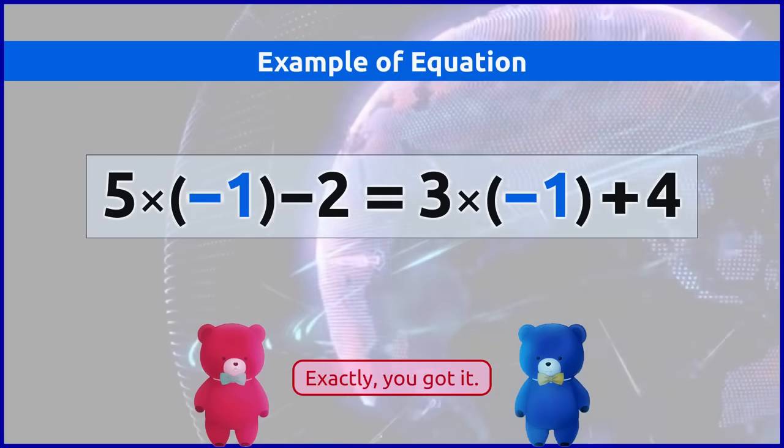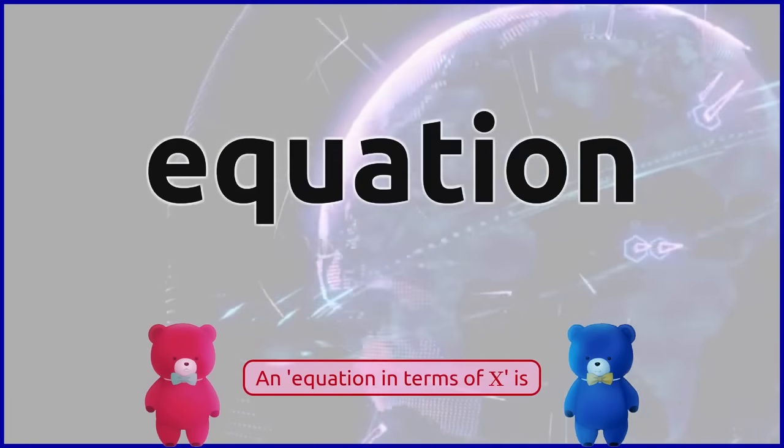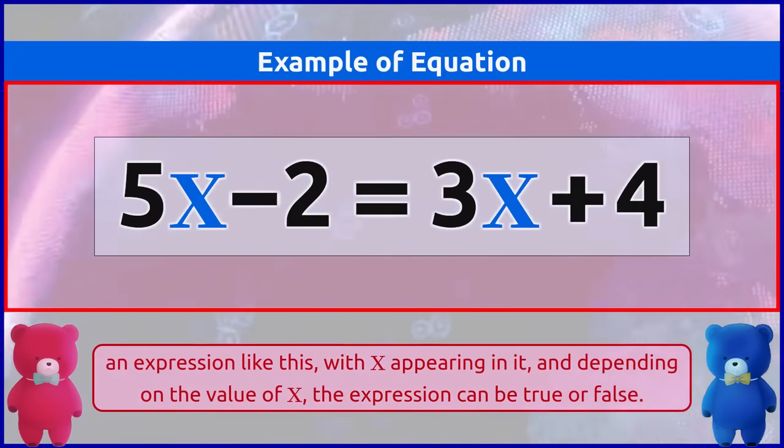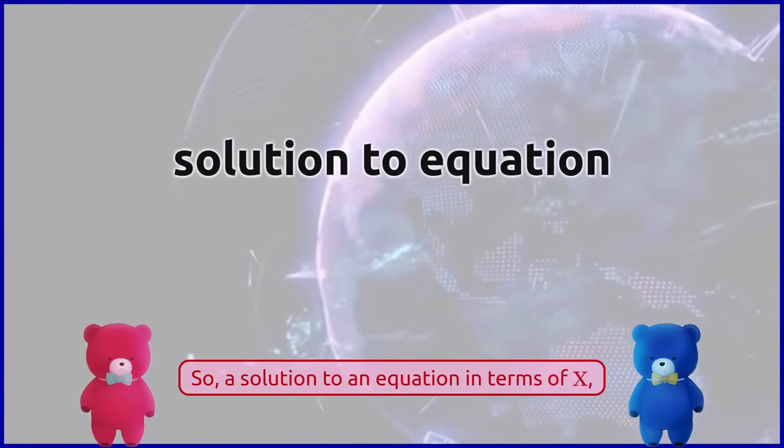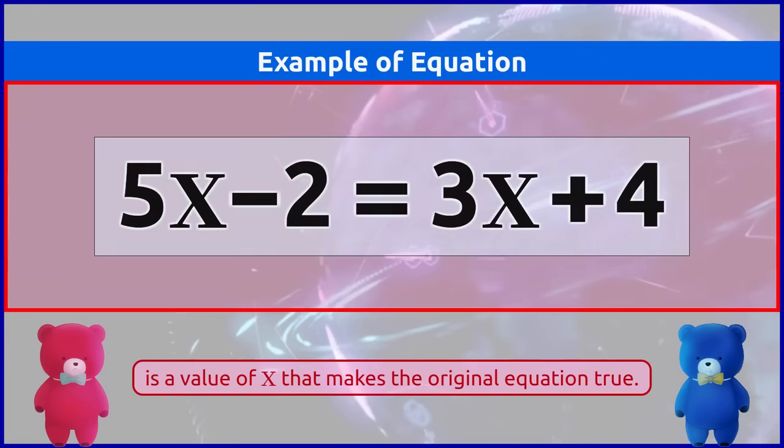Exactly, you got it. An equation in terms of x is an expression like this, with x appearing in it, and depending on the value of x, the expression can be true or false. The solution to an equation in terms of x, like x equals 3 in this equation, is a value of x that makes the original equation true.